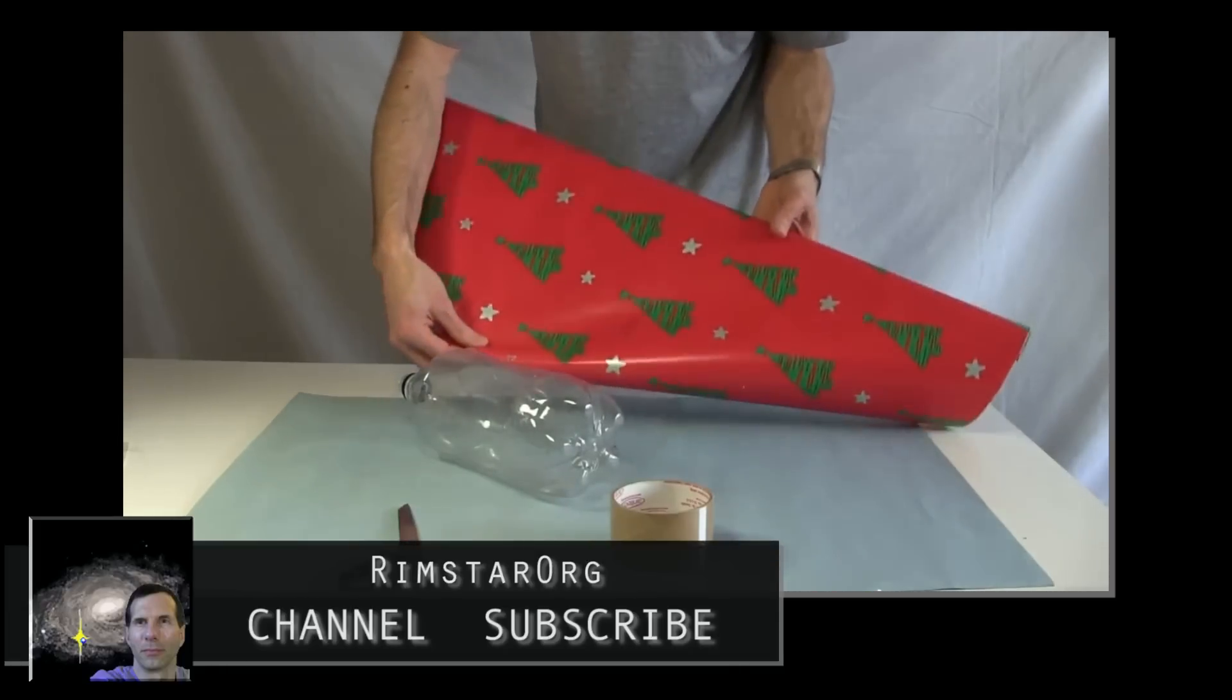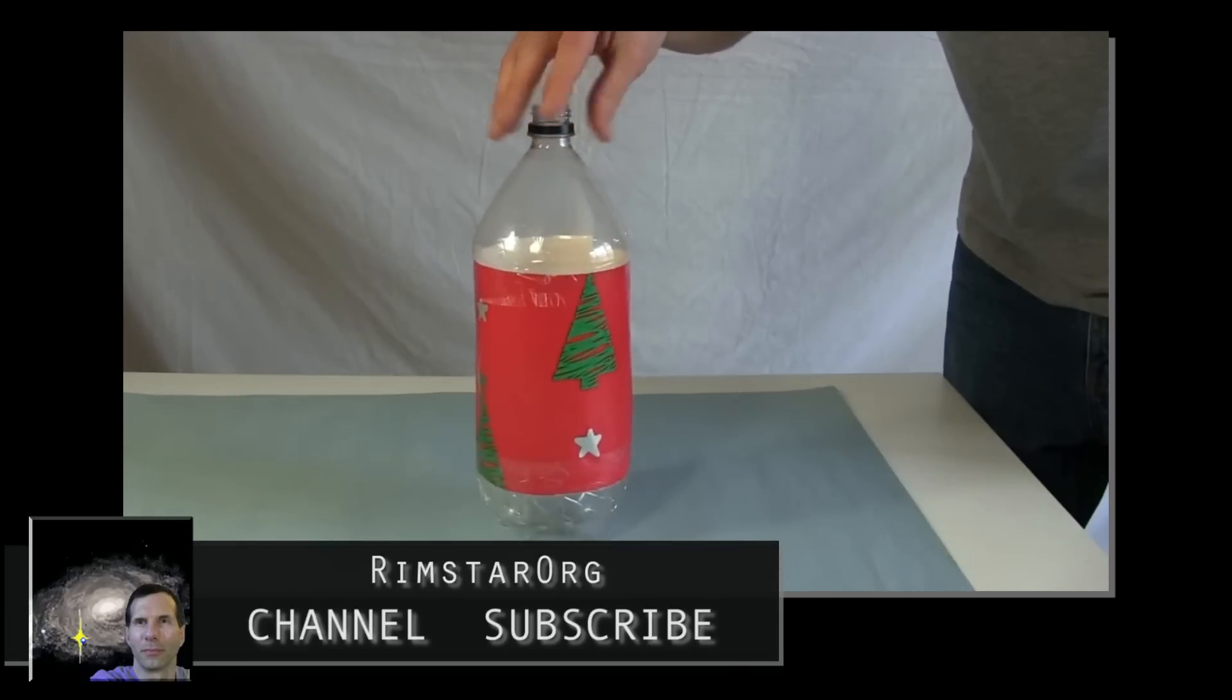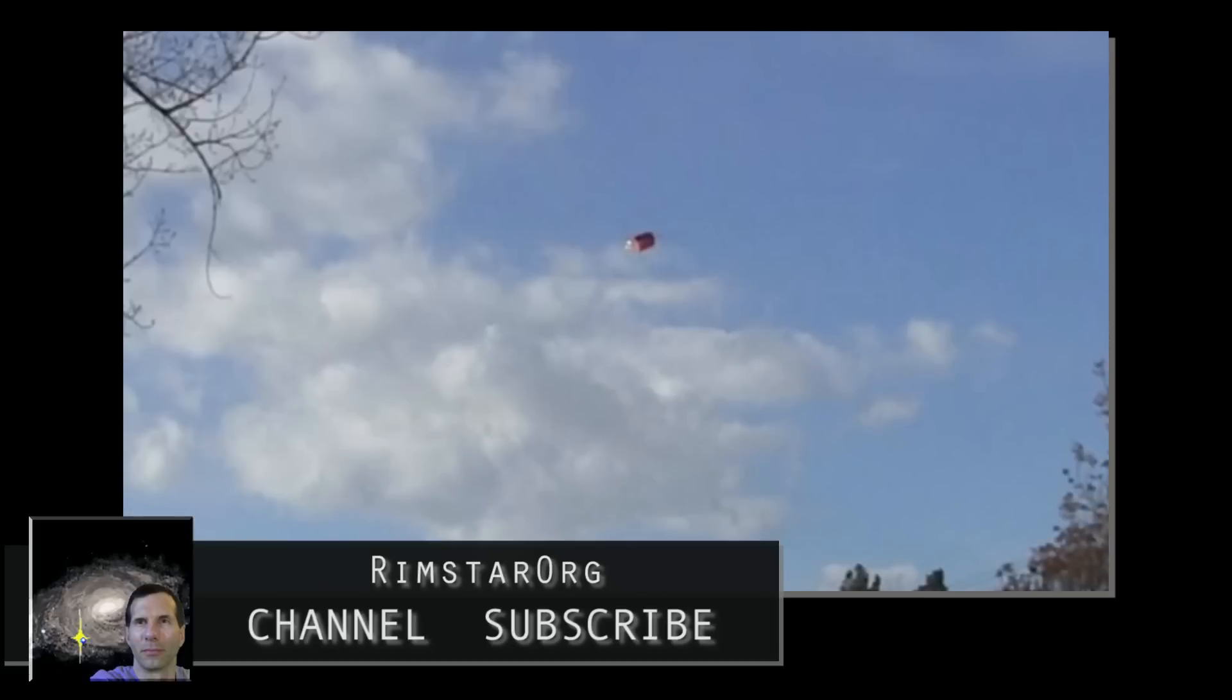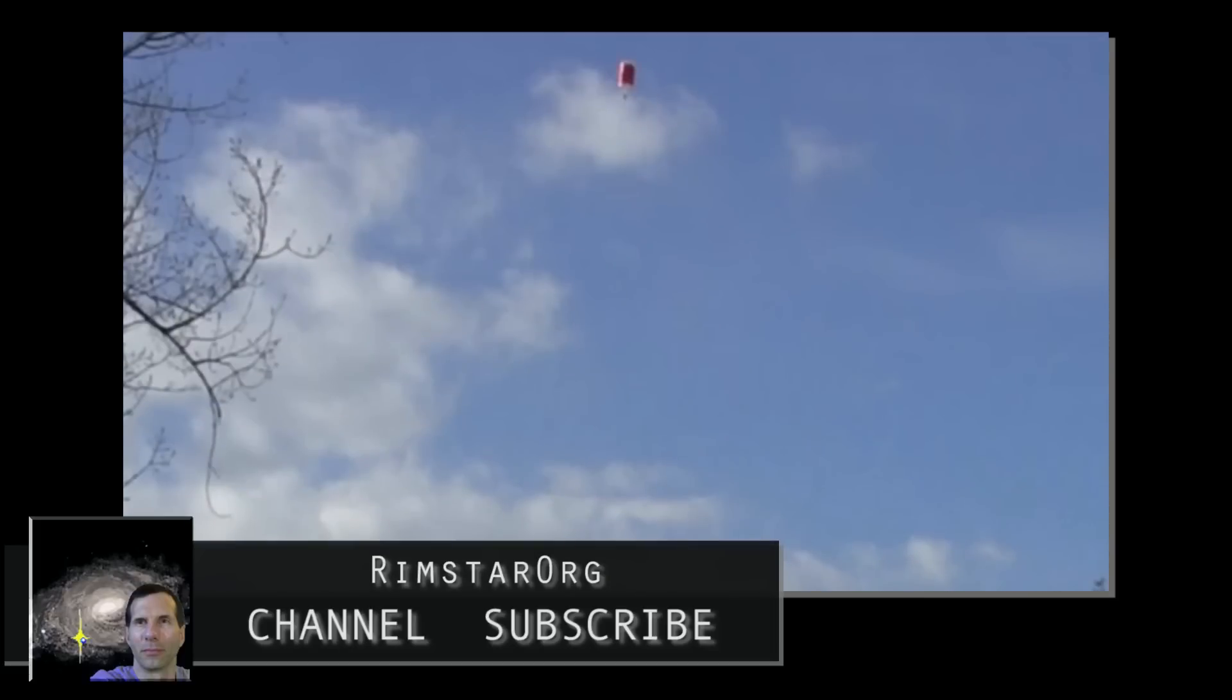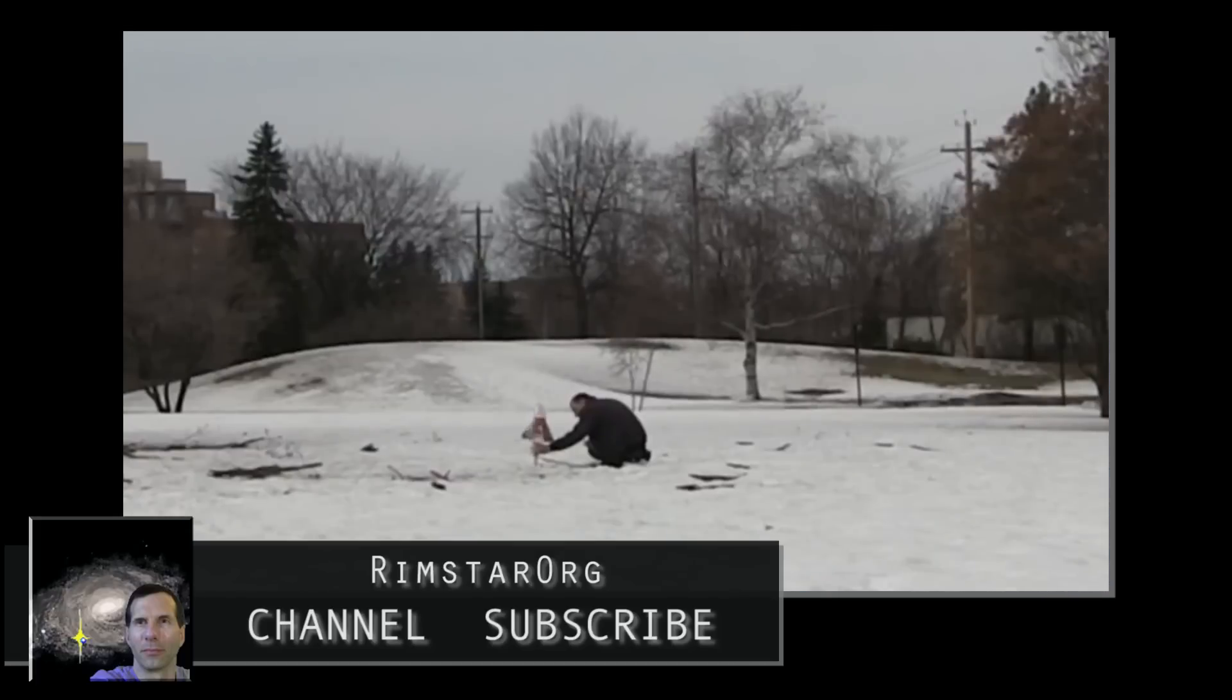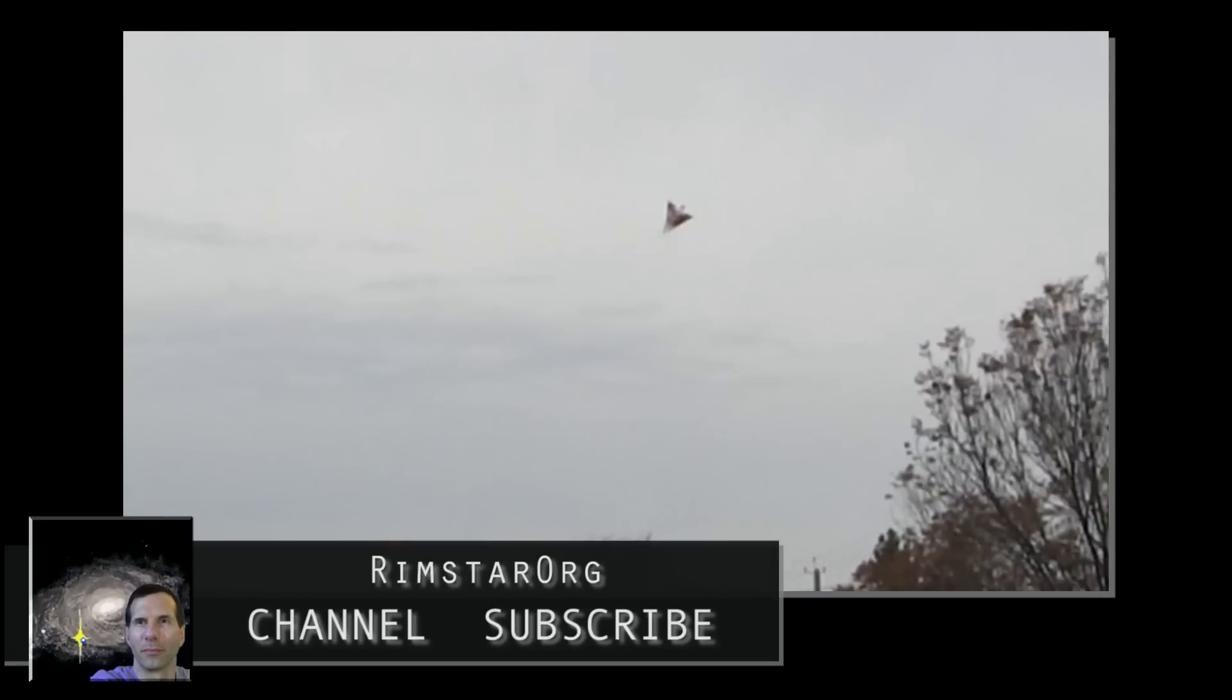I covered my bottle in bright red Christmas wrapping paper to make it more visible. Visible enough to see that the rocket tended to rotate wildly when it ran out of water. So I added fins and a nose cone. Now when it ran out of water, it flipped over and flew backwards.